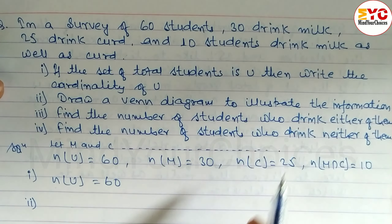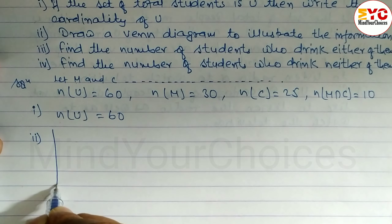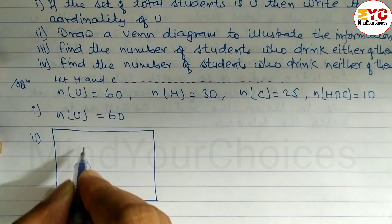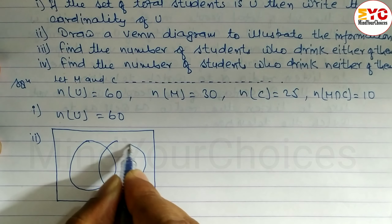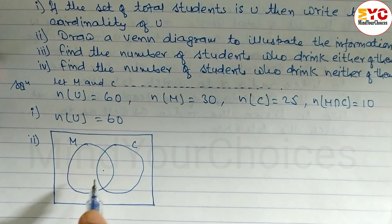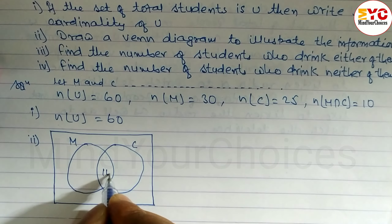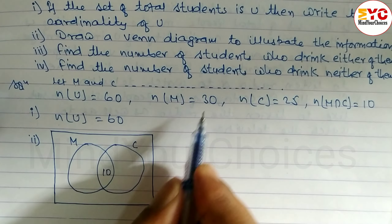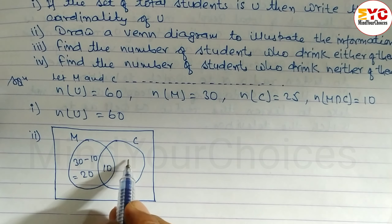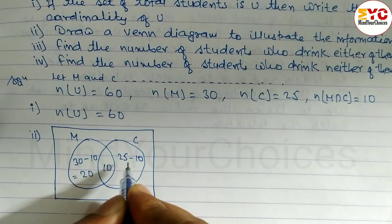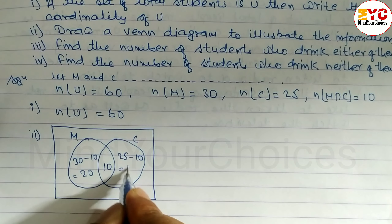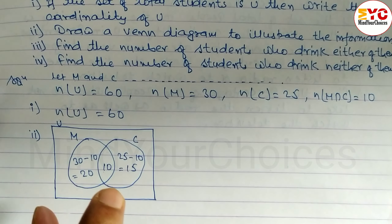Number 2: Draw the Venn diagram and illustrate the information. We need to draw a diagram with two subsets — M for milk and C for curd. This circle is for milk, this one for curd. In the middle — the intersection — we write 10. For only milk: 30 minus 10 gives us 20, so we write 20 here.